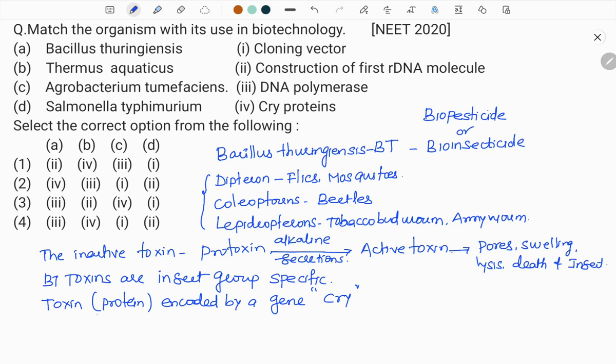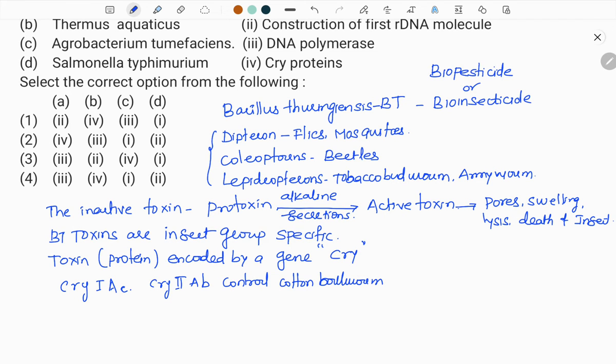So many types of cry genes are there that produce different types of toxins which are specific towards the insect that they kill. For example, cry 1Ac, cry 2Ab control cotton bollworm. Cry 1Ab controls corn borer. This is what we can understand about Bacillus thuringiensis or Bt bio insecticide.